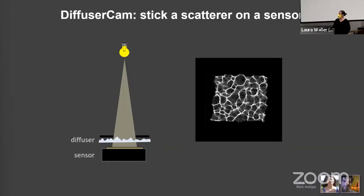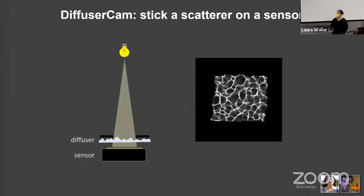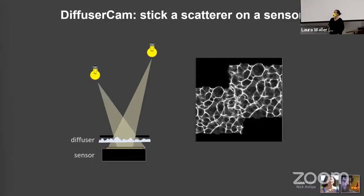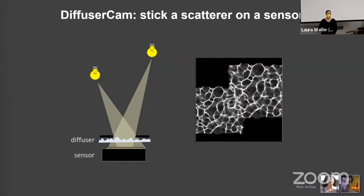So a point in the world maps to this point spread function. It's just like the impulse function of the system. And then if I move that point in the world, it's basically the same point spread function, but it's shifted. And that is by design, because this diffuser is thin. You can call this like an infinite memory effect, or you can say it's in the Ramanath regime for diffraction. Basically, this shift effect is really valuable because it means that the system is shift invariant. If I turn on two points, I get the linear sum of the responses from each. So this is a linear system in intensity.